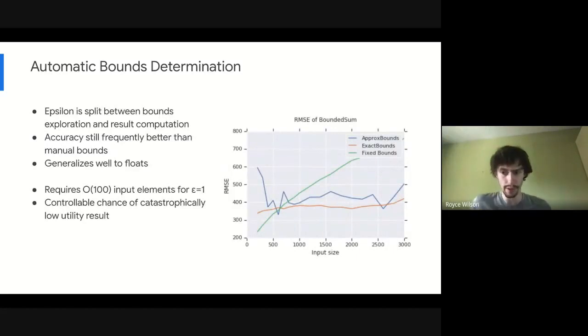But importantly, we'll note that we have to split epsilon when determining automatic bounds between the automatic bounds determination and the actual function computation. So this has an accuracy hit. But automatic bounds we found is still more accurate than manually set bounds. It's very difficult to set good bounds by default. And generally automatically inferring them results in better accuracy overall.